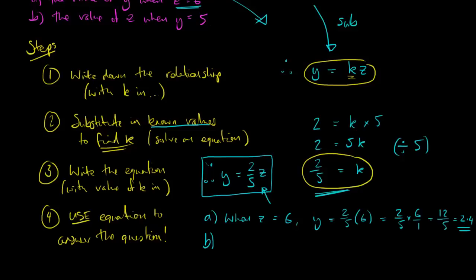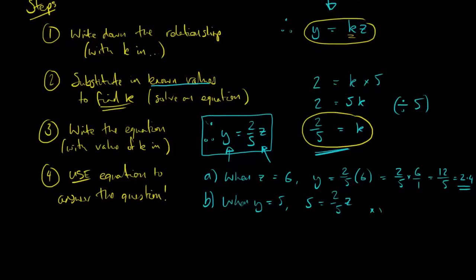Part B wants to know what value z has when y is equal to 5. So, again, I just replace y in the equation with the value that it's got. When y is 5, I get 5 is equal to 2 fifths times some value of z. So, now, z is the thing in my equation that I need to find. And to do this, I'm going to choose to multiply both sides by 5. That will get rid of the 5 from the fraction. So, I get 25 equals 2z. And then simply to get z, I will divide by 2. So, 25 divided by 2 is 12.5. And that is equal to z.